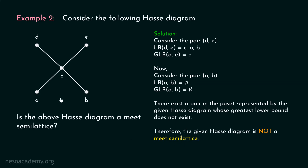Therefore, it is true that the given Hasse diagram is not a Meet Semilattice. I have considered only the pairs which are unrelated — d and e are unrelated, and a and b are unrelated. And you can clearly see that greatest lower bound of a and b does not exist. Therefore, the given Hasse diagram is not a Meet Semilattice.